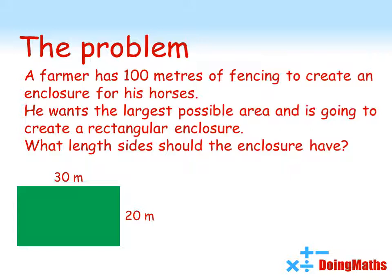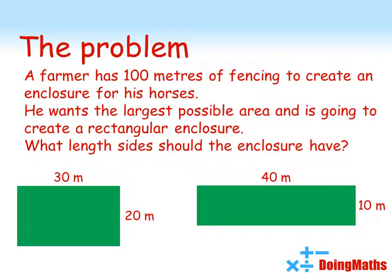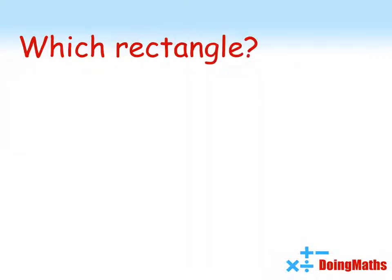So, he could build an enclosure with sides of 30 metres by 20 metres. He could go for a longer, thinner enclosure of 40 metres by 10 metres. But he wants to find the one with the largest possible area. So, let's look at some examples.